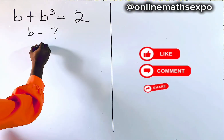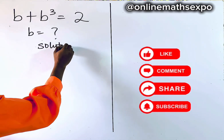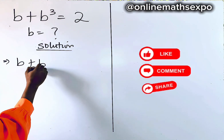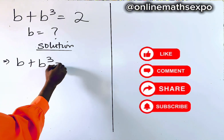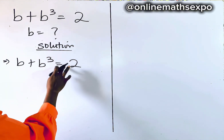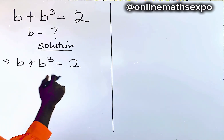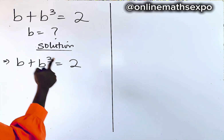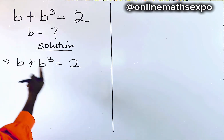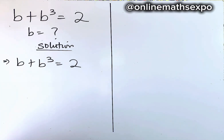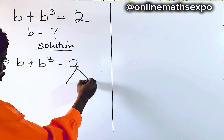Let's begin with our solution. We have b + b³ = 2. We can rearrange this such that we find two numbers that, when we cube it and also add the same number to its cube, give us back two.